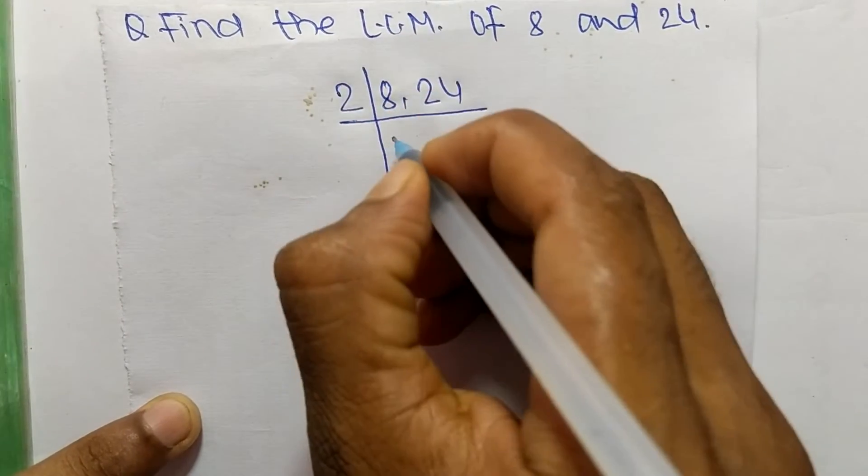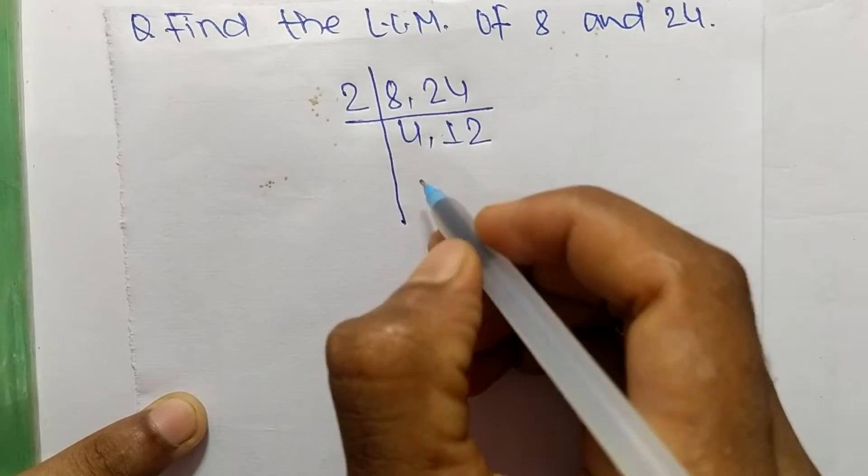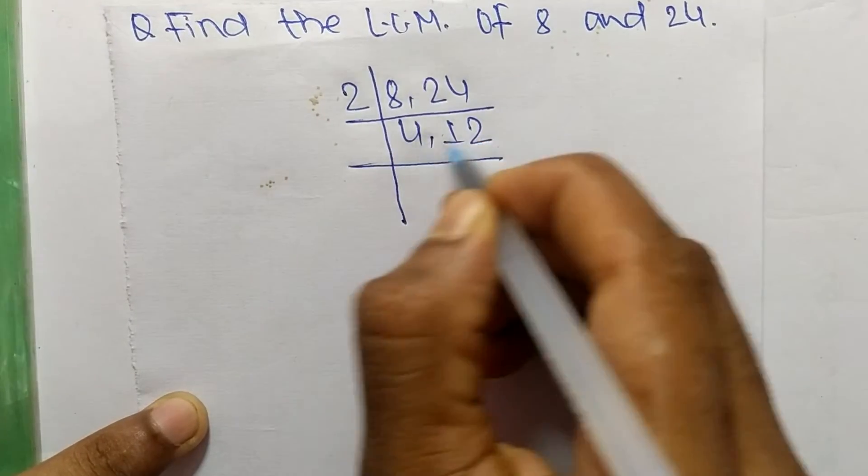So 2 times 4 means 8, and 2 times 12 means 24. Now 2 can again divide both numbers.